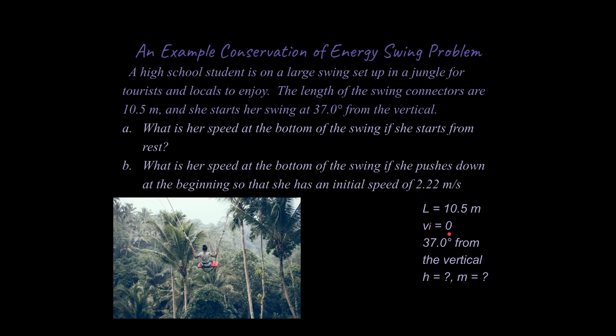But for part A we're going to say she doesn't push off. She just sits on the swing and starts from rest and then goes down. And then we can say we know what this angle is. It's 37 degrees from the vertical. We don't know what the height is. The height difference from her initial point to her final point. And we don't know what her mass is. And truth be told it doesn't matter. If she was very light or if she was normal it wouldn't matter she would have the same speed at the bottom. It is independent of mass. And I will show you exactly why that is in a moment.